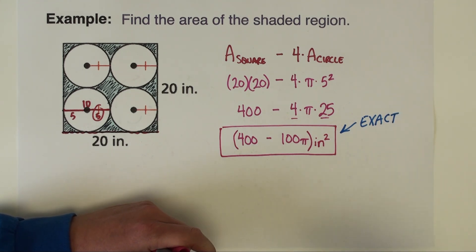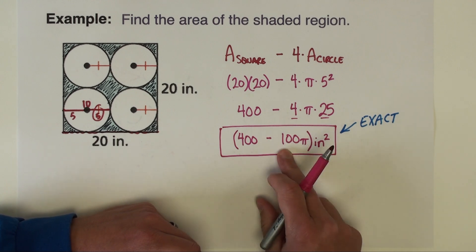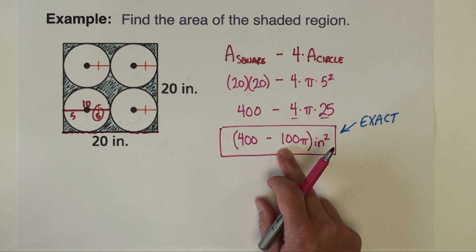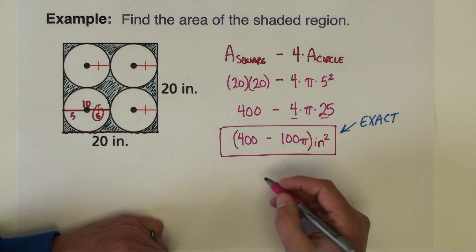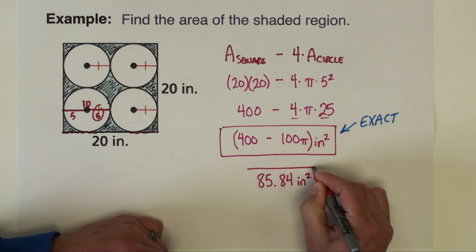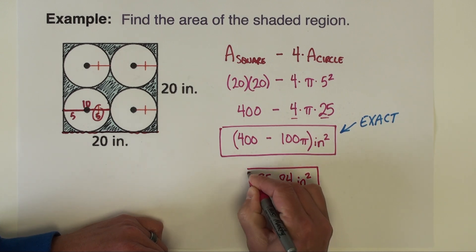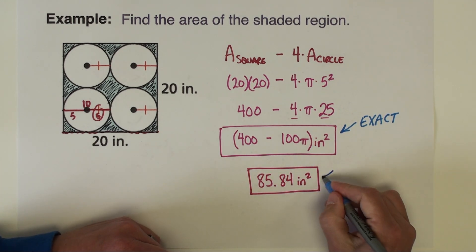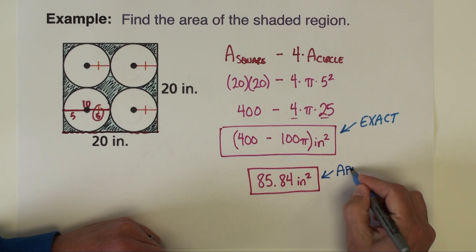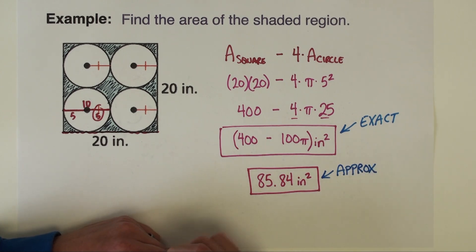If I can get by with an approximate answer, then I'm going to go ahead and type this into the calculator. So into the calculator, 400 minus 100 pi is going to be about 85.84 inches squared. And that's going to be an approximate answer. So again, just always paying attention to the directions, how are you asked to report your answer and then give the appropriate one based off that.